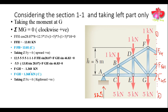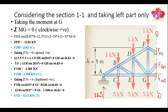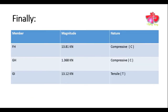We write the last equilibrium condition: ΣF_X = 0, assuming rightward forces as positive. Solving, we find F_GI = 13.12 kN. The positive value indicates the force in member GI is tensile: F_GI = 13.12 kN (tensile).